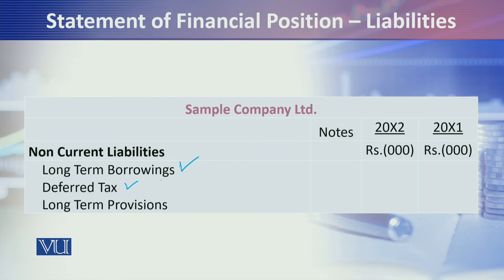Long-term provisions: when we are dismantling a fixed asset, at the time of recognizing that fixed asset we make a provision for dismantling, because at the end of the useful life of that fixed asset you have to incur dismantling costs. So that long-term provision is presented here in non-current liabilities.